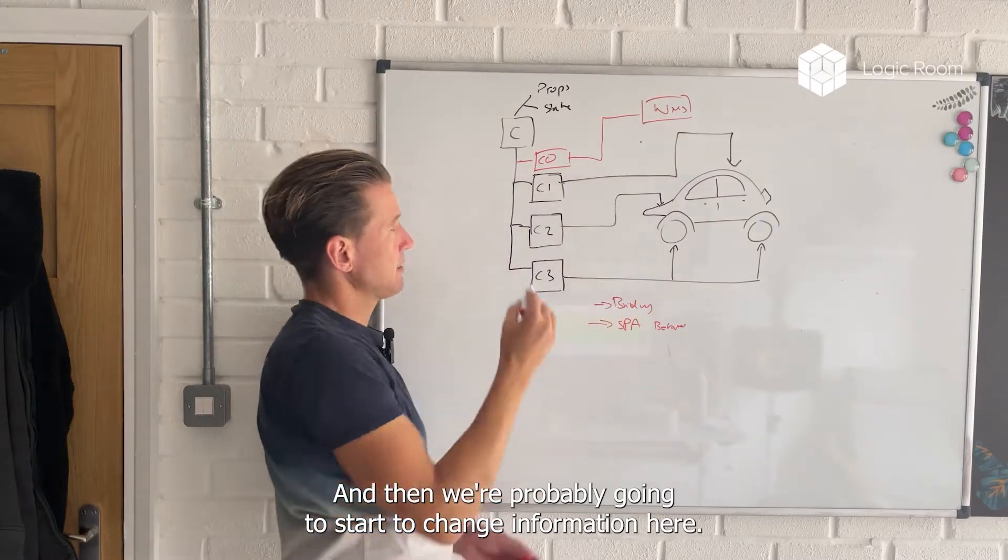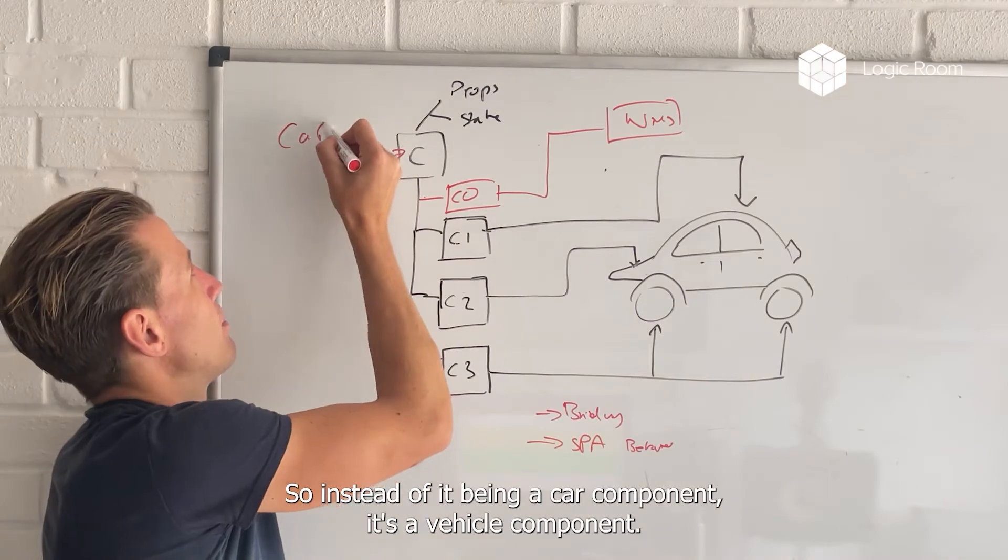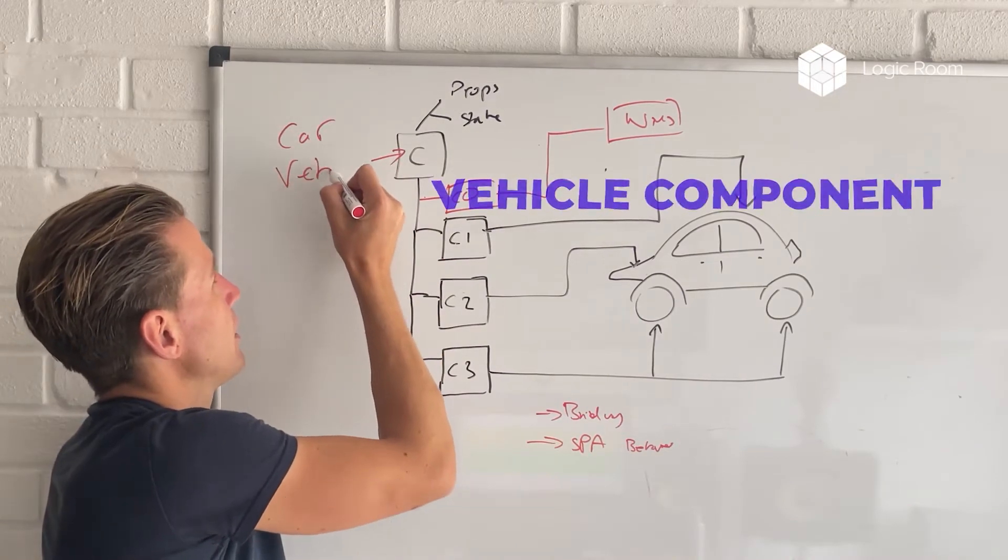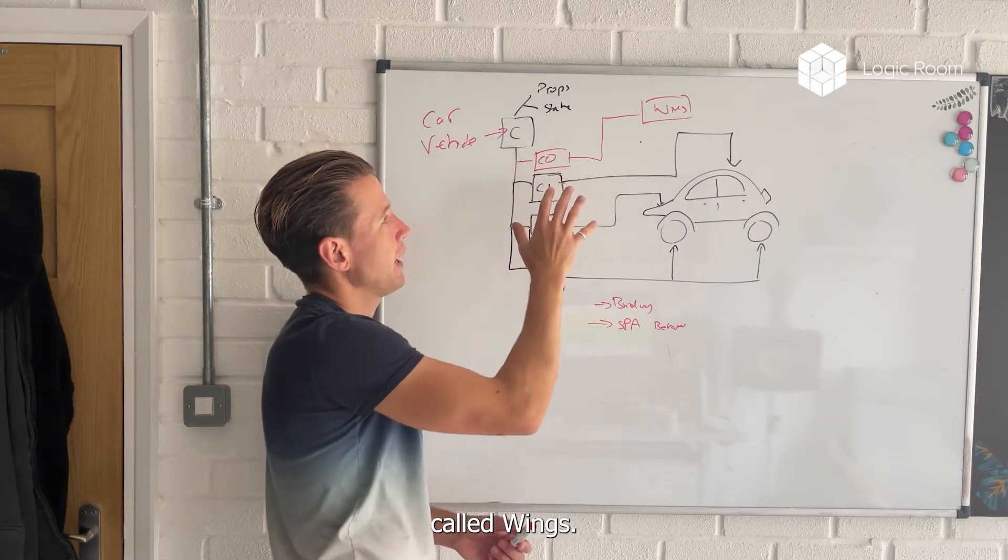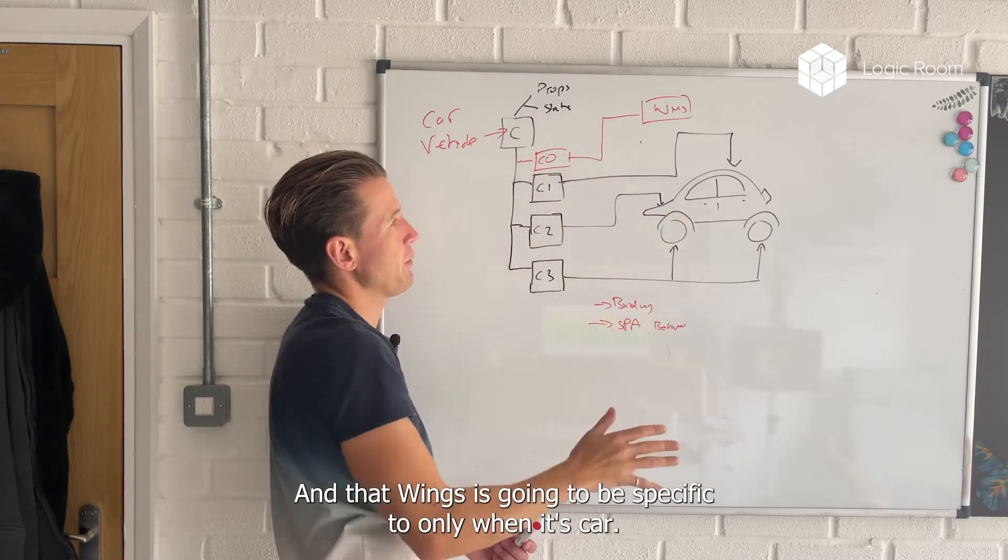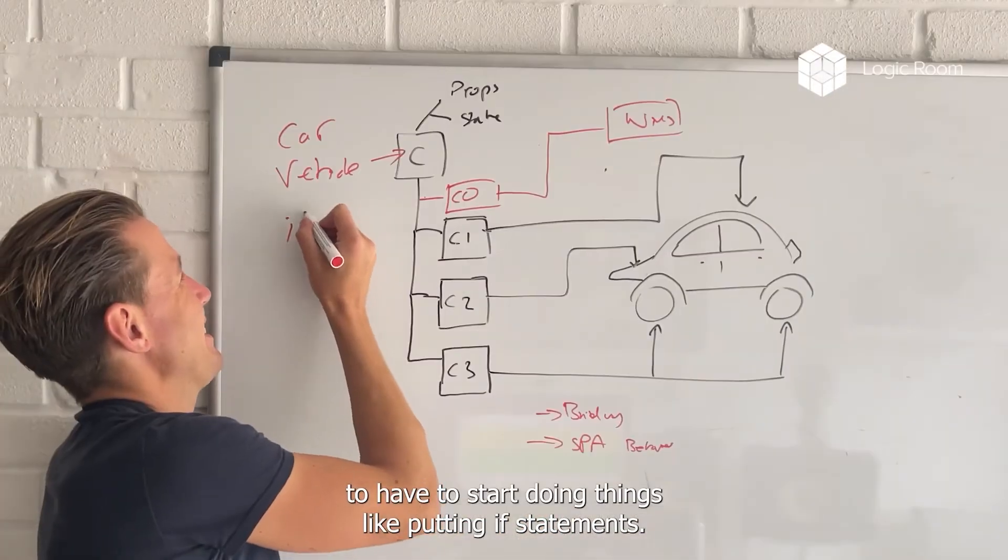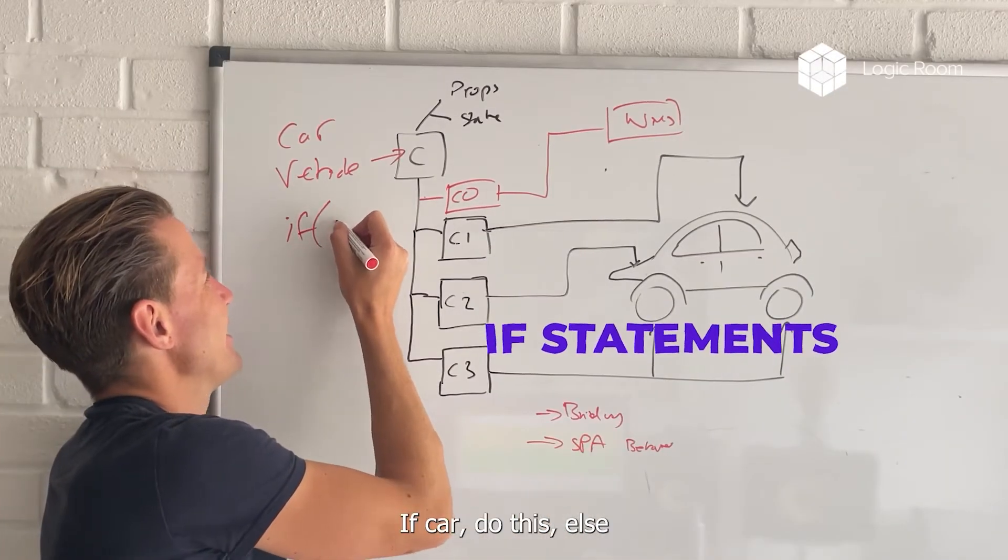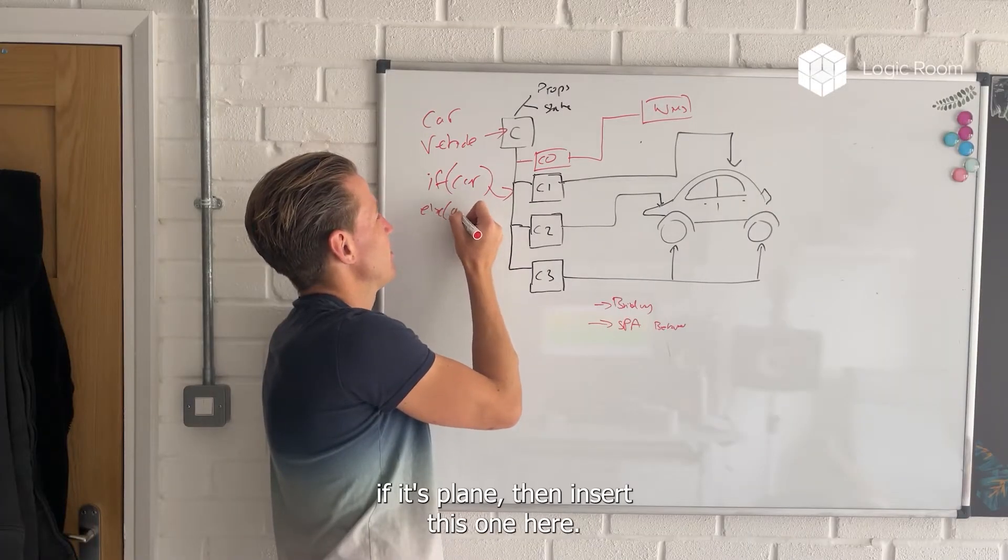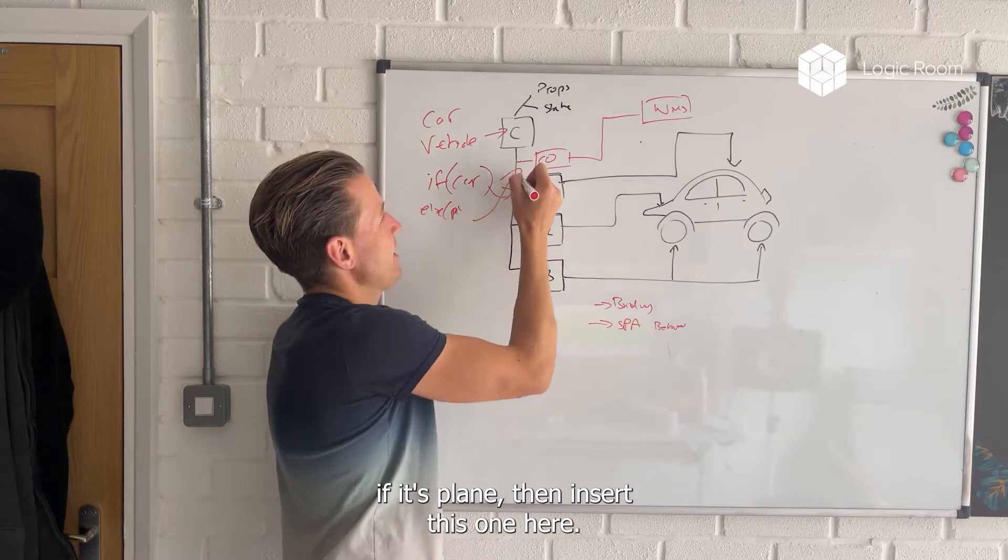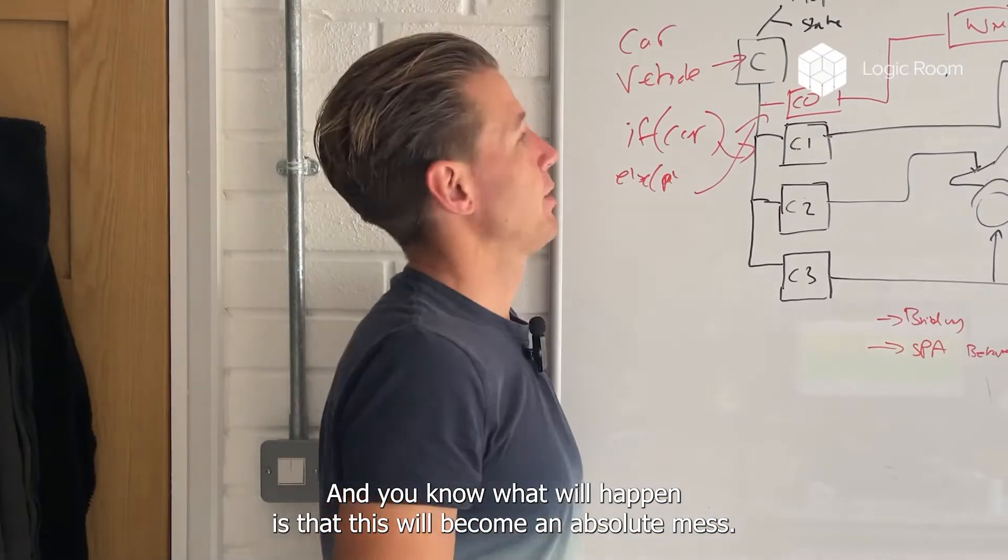Into this relationship that will represent things like wings. And then we're probably going to start to change information here. We're probably going to refactor this one. So instead of it being a car component, it's a vehicle component. But in that vehicle component, we're going to have to have a component called wings. And that wings is going to be specific to only when it's a plane. That means we're going to have to start doing things like putting if statements, if car, do this, else, if it's plane, then insert this one here. And what will happen is that this will become an absolute mess.